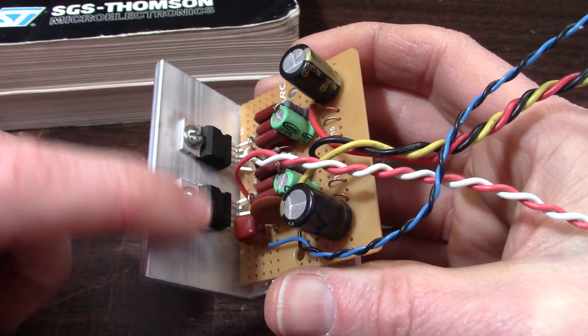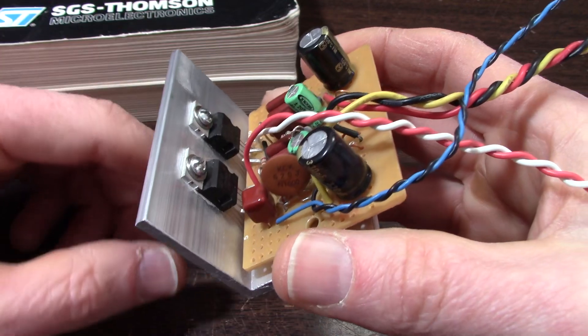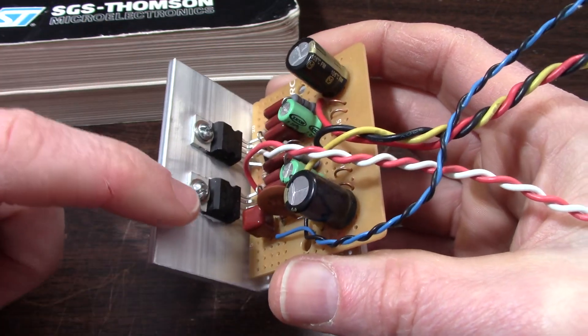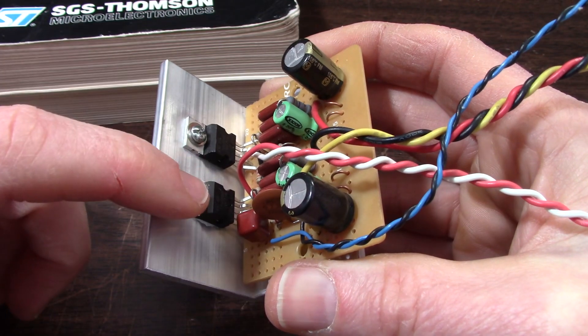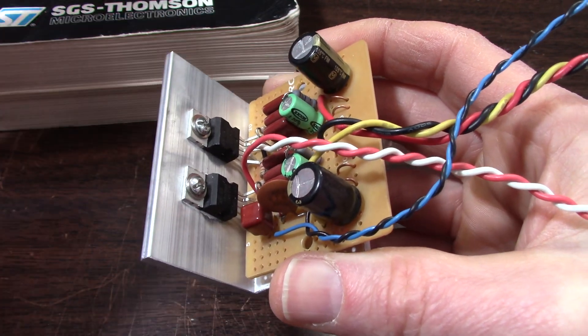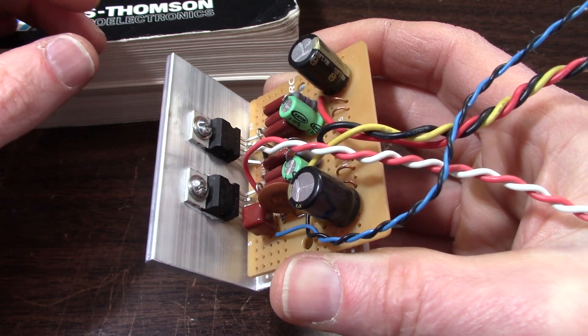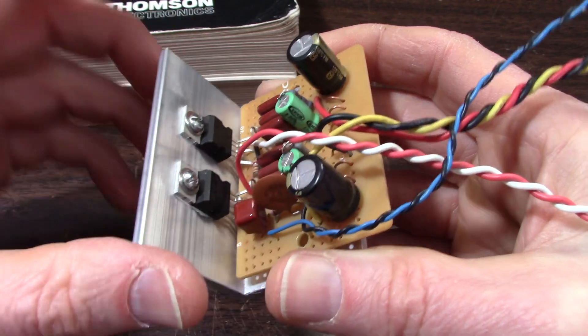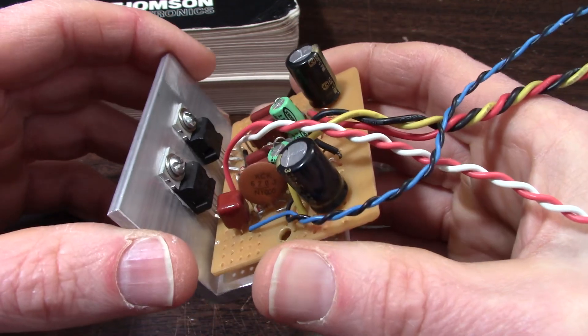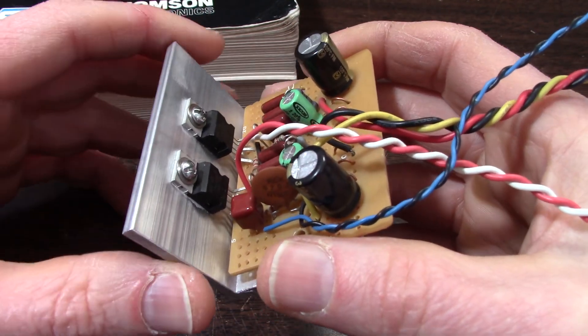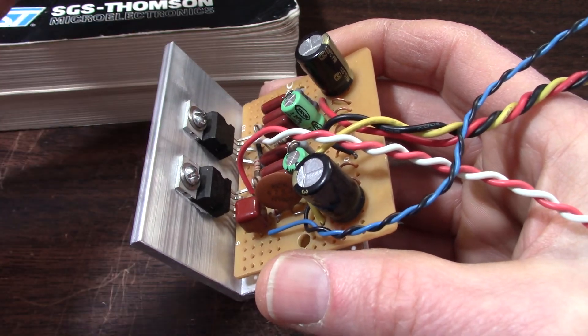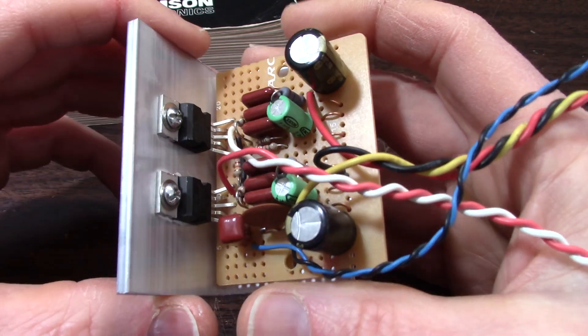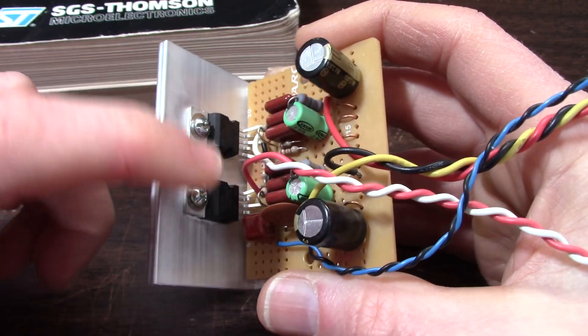They don't make the TDA 2050 anymore. If you watch my channel, I was actually impressed when I did distortion performance tests on these chips. They're actually better than the LM 1875 as far as distortion performance - I was quite surprised. I always thought the LM 1875 would be better. All the chips I have are authentic.